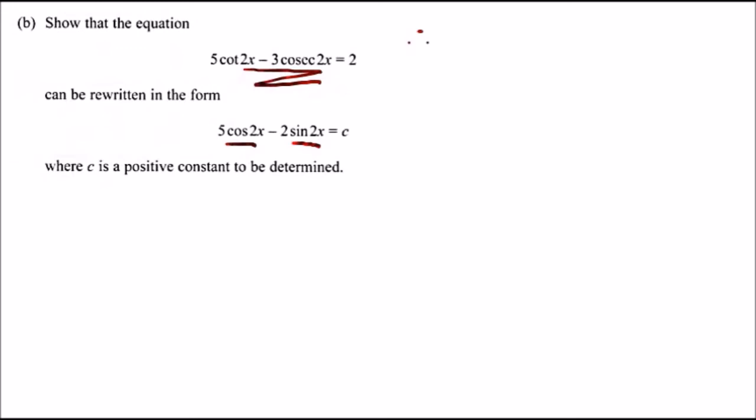I would convert everything into cos and sine. What is cot 2x? cot 2x is literally the same as the opposite of tan, so instead of sine over cos, it's cos over sine, and of course with 2x.